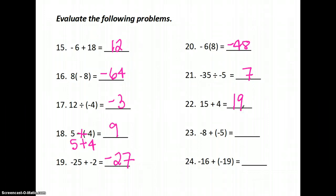Next one, -8 + (-5). My signs are the same, so I add them, and I keep the sign. So, -13. Last one, same thing. My signs are the same, so I add 16 and 19, which gives me 35. Then I keep the sign, because the signs are the same, so -35 is my answer.